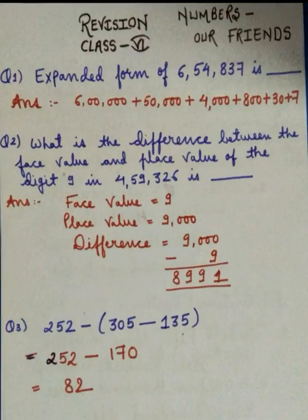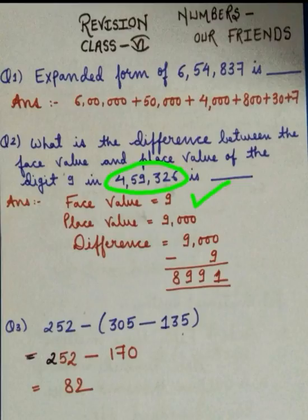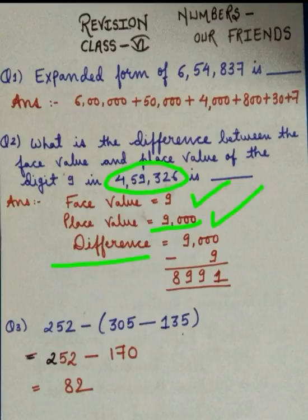Moving to the next question: what is the difference between the face value and place value of the digit 9 in 459,326? Let's revise what we mean by face value. Face value of a digit in a number remains the same irrespective of its place. So the face value of 9 will be 9 only. But the place value of a digit depends on its place in the number. Here, the place value of 9 is 1,000, so we multiply 9 by 1,000 and get 9,000. The difference is 9,000 minus 9, which gives 8,991.